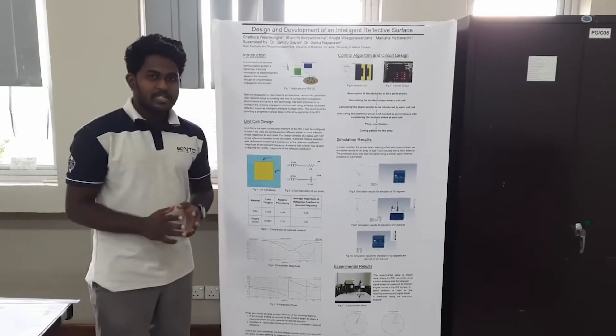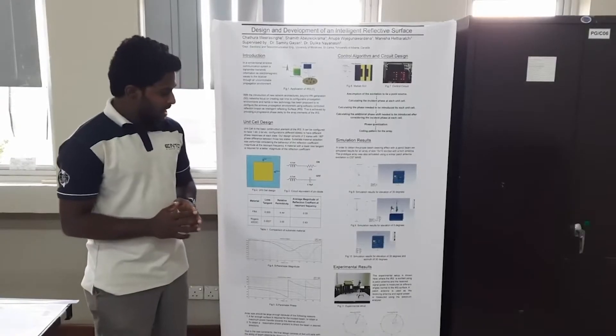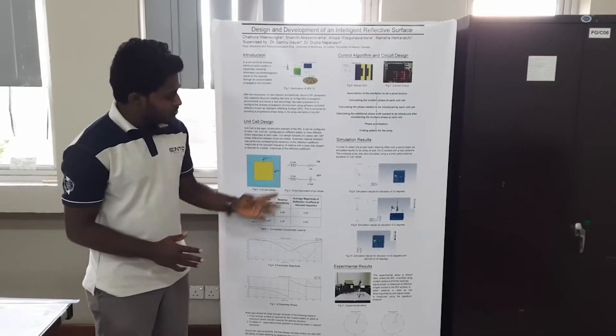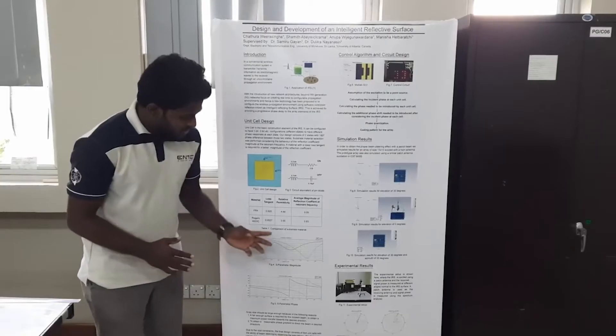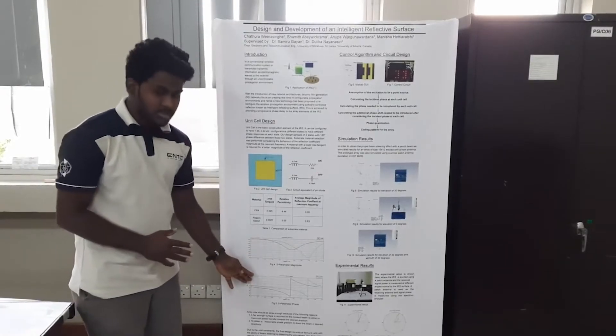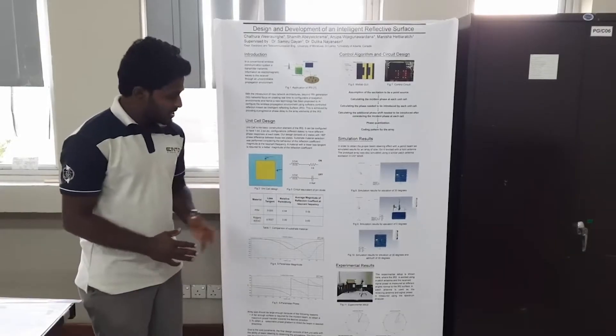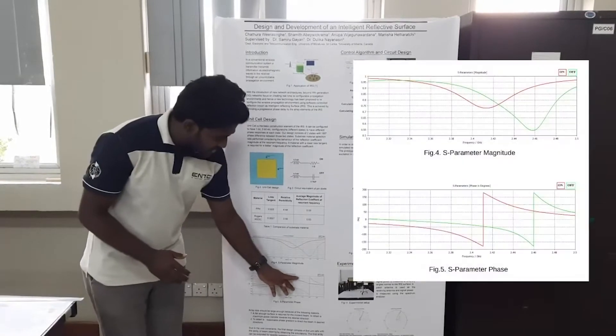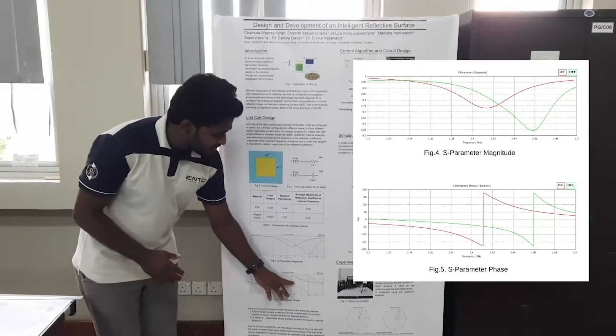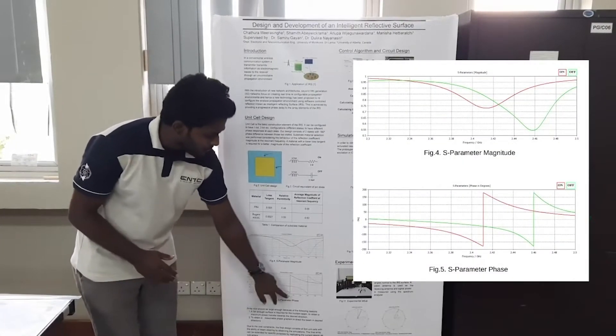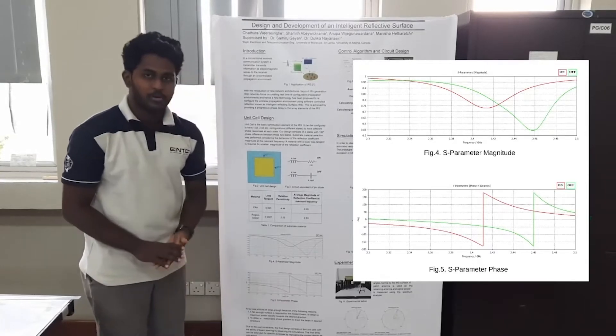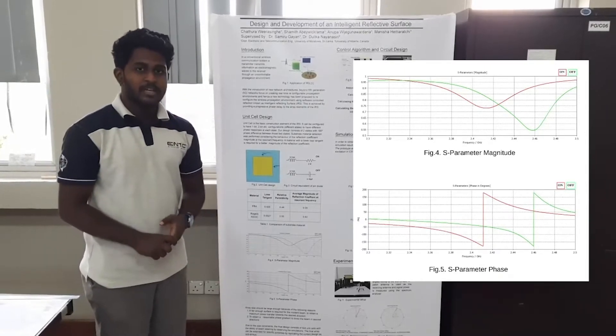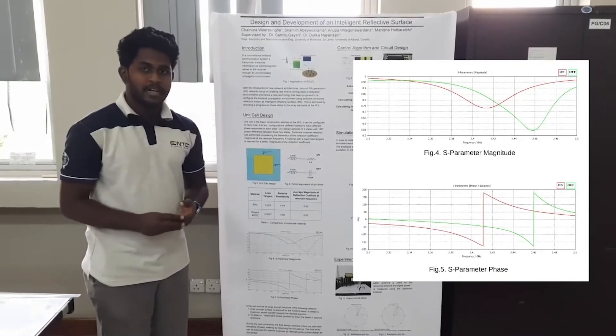So we designed this unit cell in such a way that it has a 180 degree phase difference between these on and off states at the operating frequency. You can see here the magnitude and phase responses of the unit cell which we simulated using CST Microwave Studio. Here you can see it has a 180 degree phase difference between these two states at the operating frequency of 2.4 GHz. It also has a magnitude response which is closer to 1 so that we can have maximum power radiated to the reflected beam.